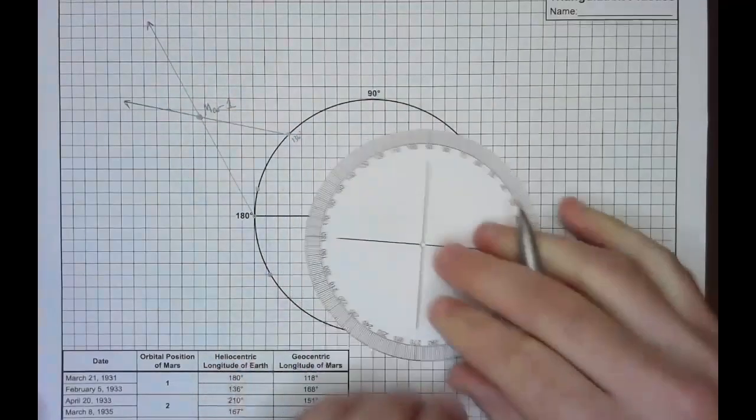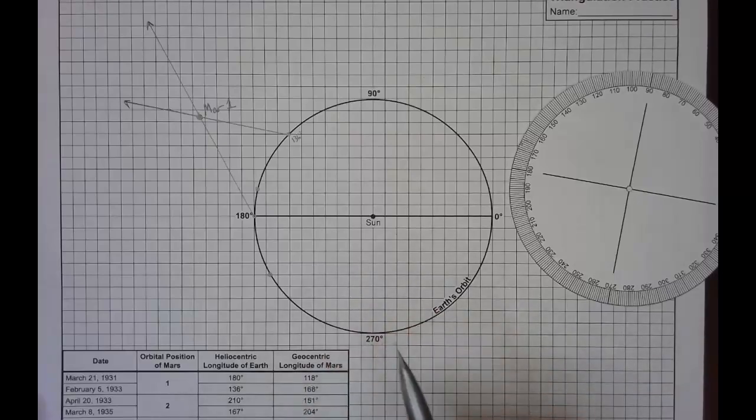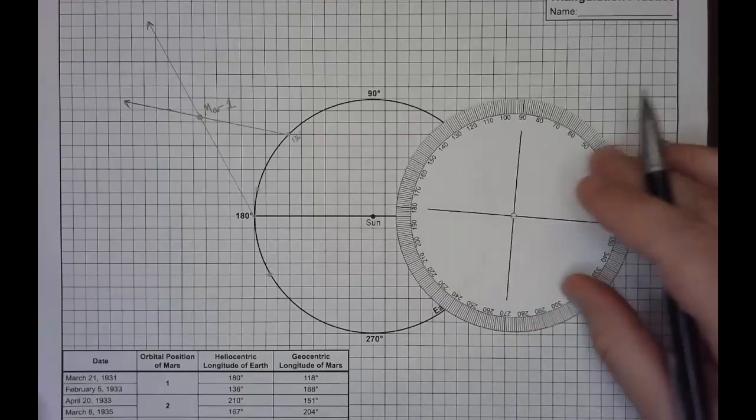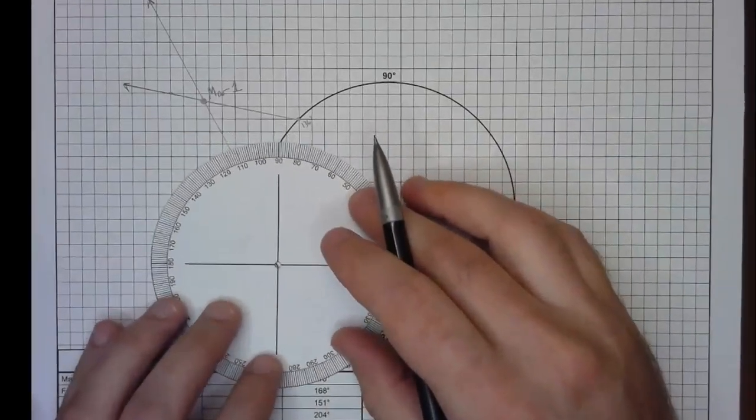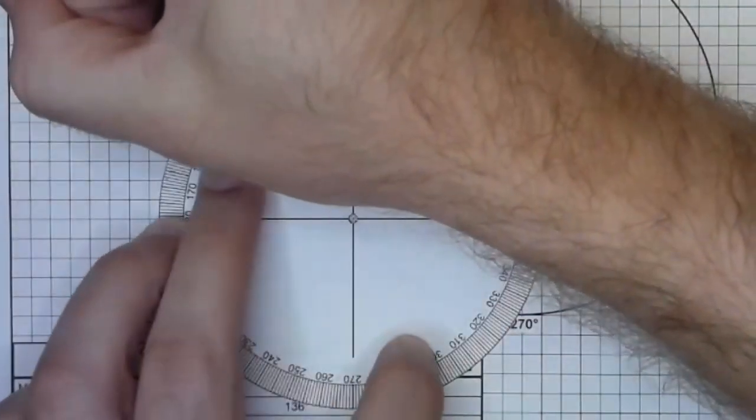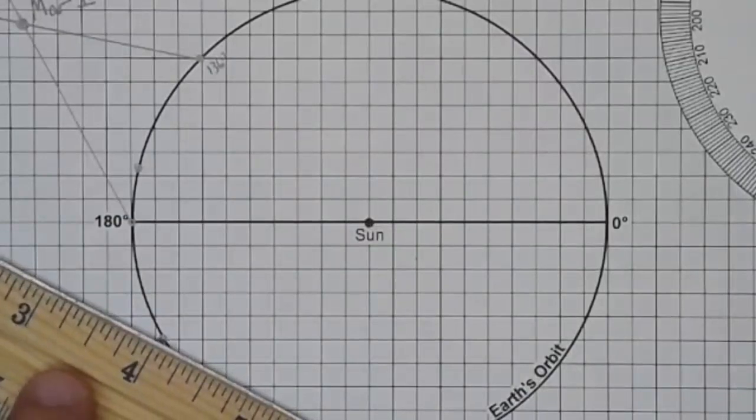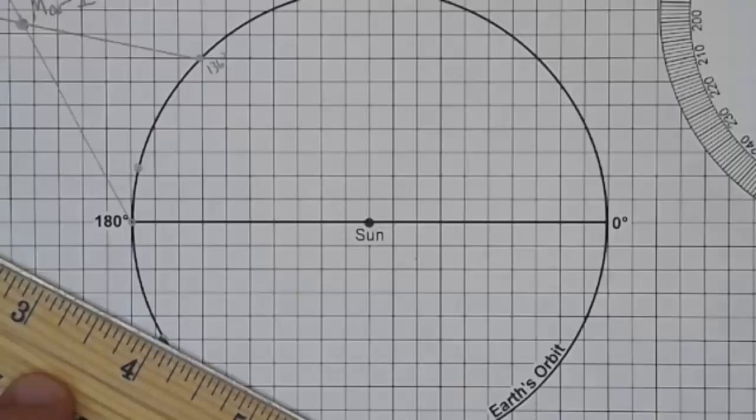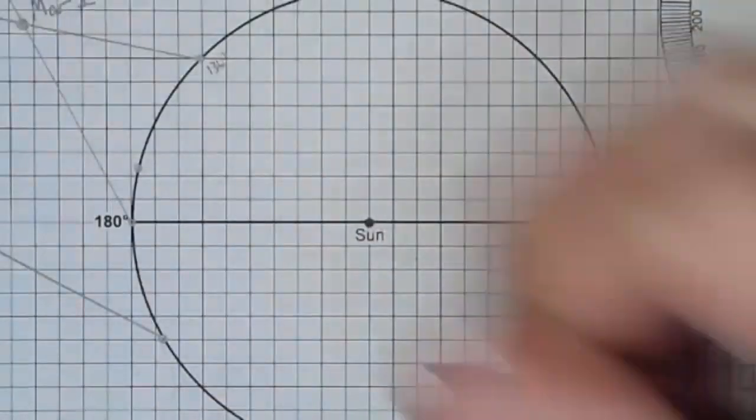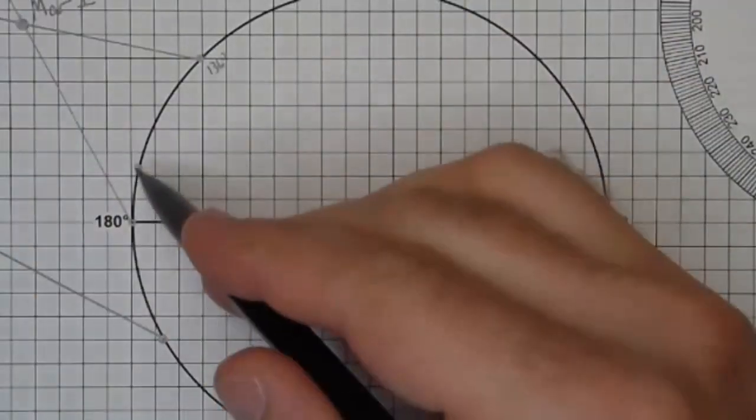And I would recommend only plotting two of these at a time. That's easy enough to keep track of. If you feel like that's too much of a stretch, I would just do a single pair at a time. So from 210 degrees, I'm going to recenter this and plot 151. So 151 right here. Strike my line, connecting the heliocentric longitude of Earth with the geocentric longitude of Mars. And I'm just going to extend that well beyond the point. I'm not sure where the intersection point will be between this line here.